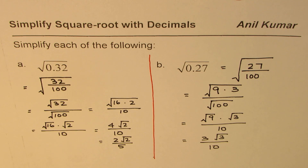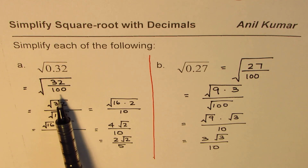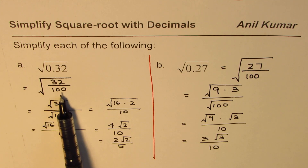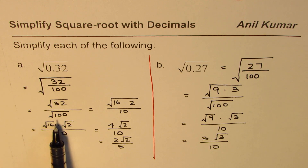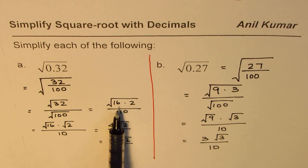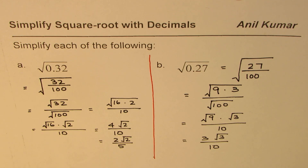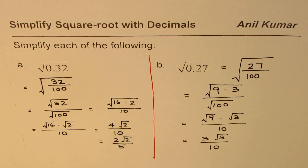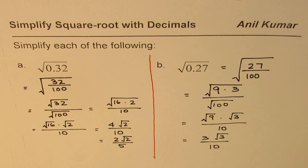I hope the steps are clear. The first step is to write the decimal number as a fraction with whole numbers — multiples of 10 help us do that. Then write the whole number within the square root as a product of two numbers where the first one is a perfect square. Once done, apply the product rule and simplify as shown. These are the steps to simplify any square root with decimals. Thank you and all the best.